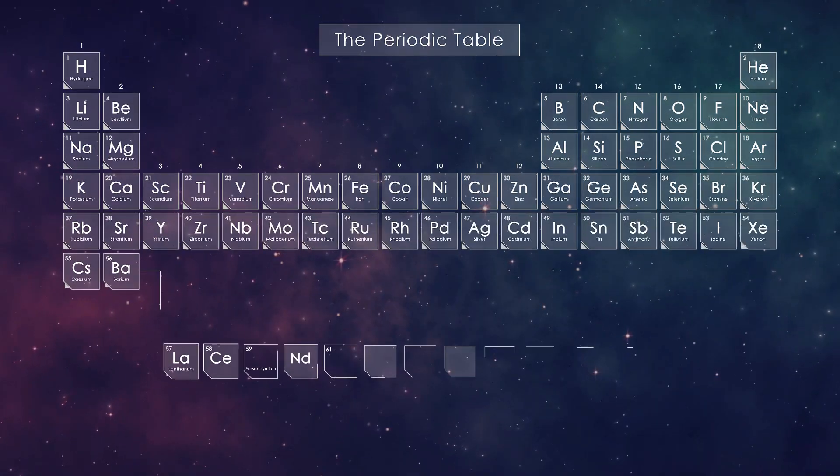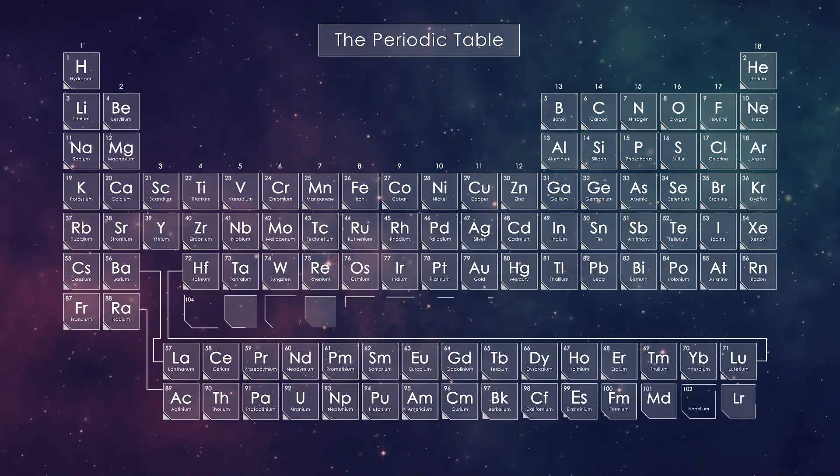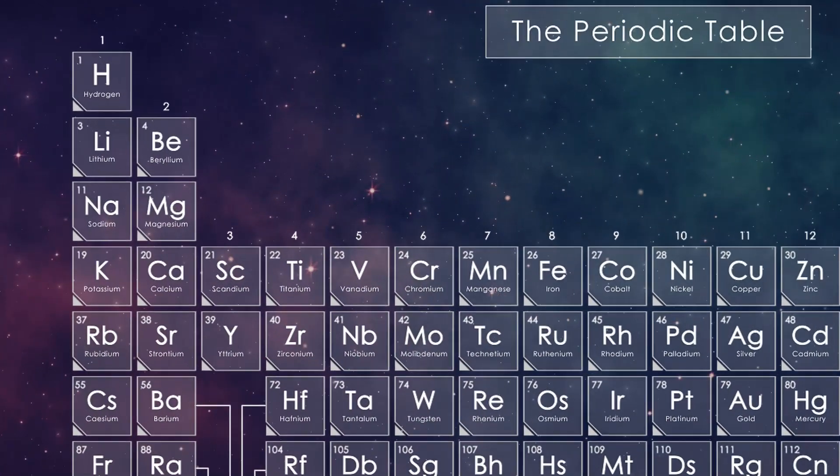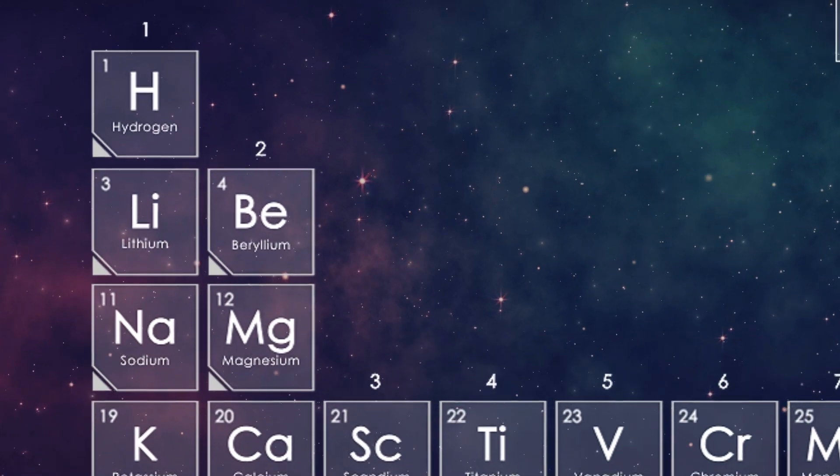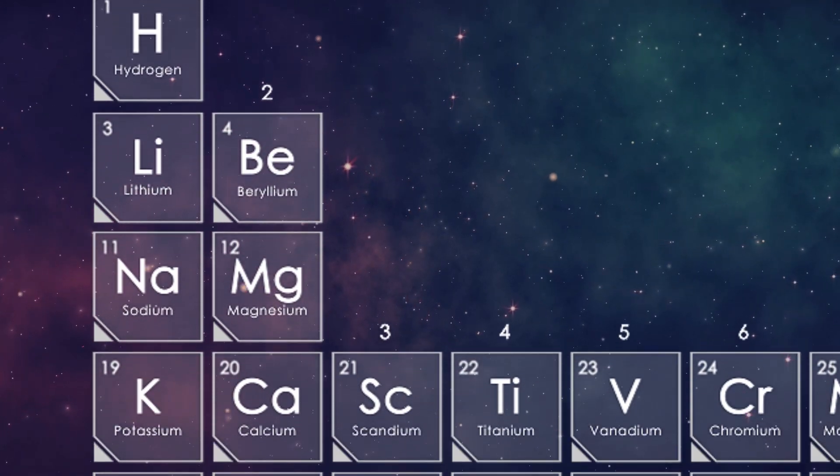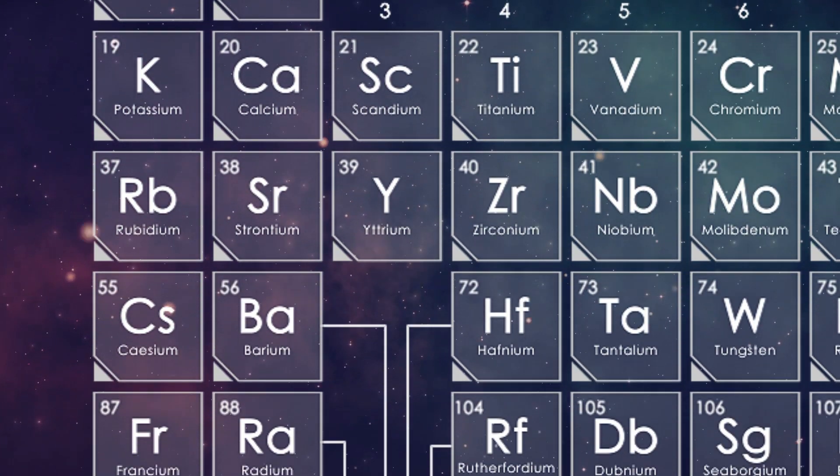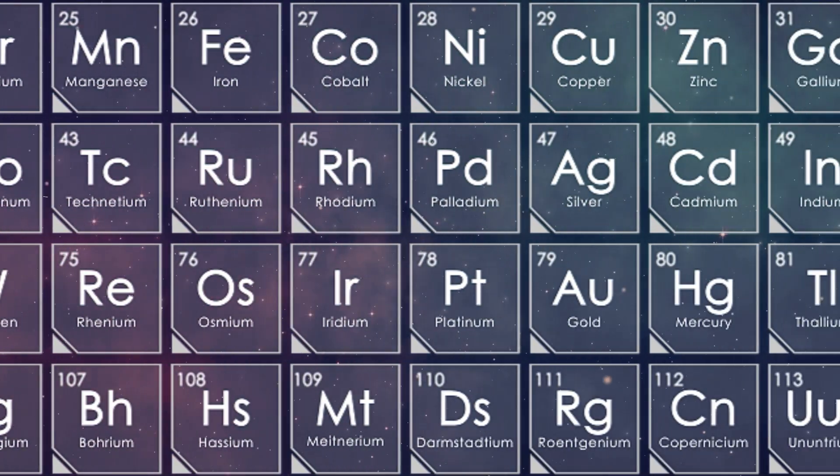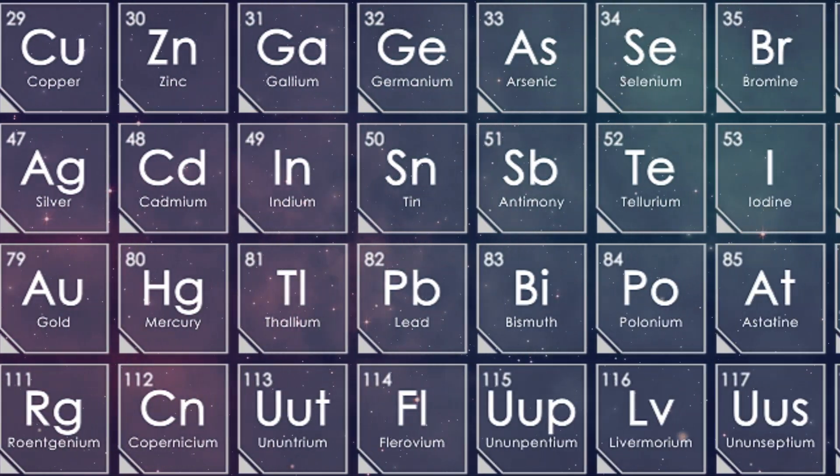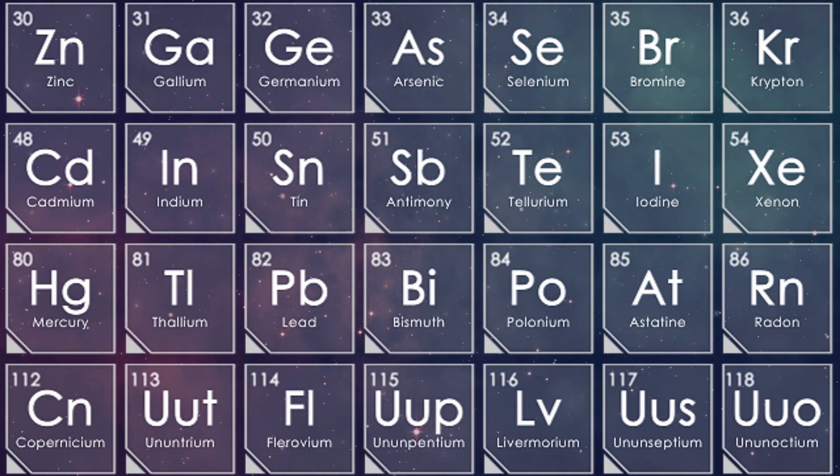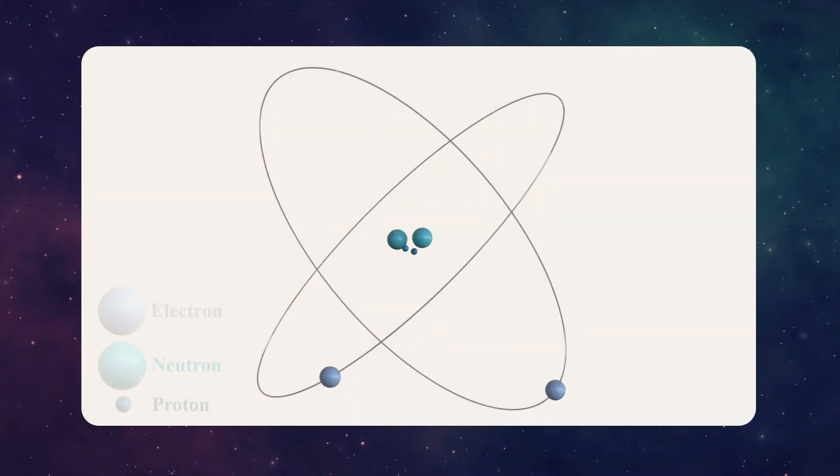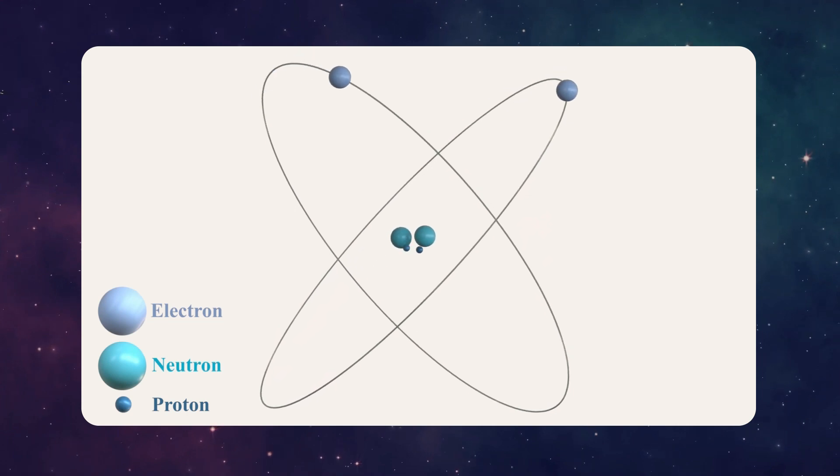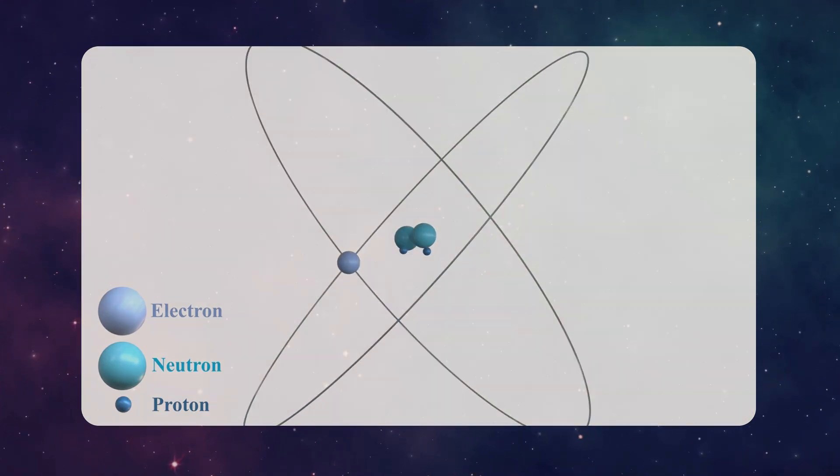Now consider the periodic table of elements, in which all elements have a similar structure, consisting of nuclei and electrons orbiting the nuclei. The differences between the elements lie in their properties, which are determined by the number of electrons, protons, and neutrons they possess rather than in their structures. Indeed, the structure and constituent particles of all elements in the periodic table are uniform.